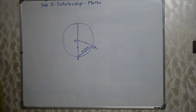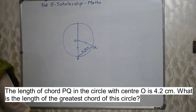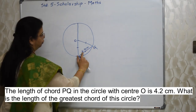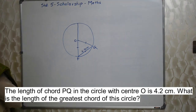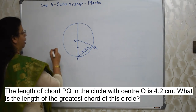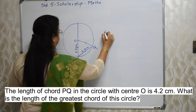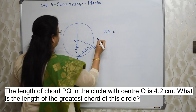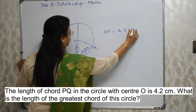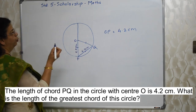Students, read the next sum properly. The length of chord PQ in the circle with center O is 4.2 centimeters. What is the length of the greatest chord of this circle? I have drawn the circle on the board. PQ is the chord which is 4.2 centimeters given in the problem. And they have indicated these 3 sides are equal with the small lines here — meaning all of them are 4.2. So OP — the radius of the circle — is 4.2 centimeters.